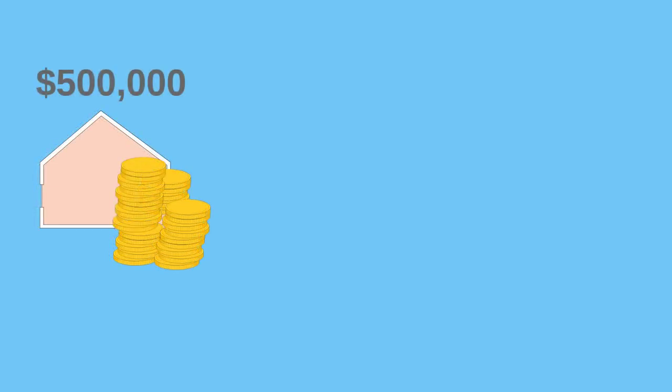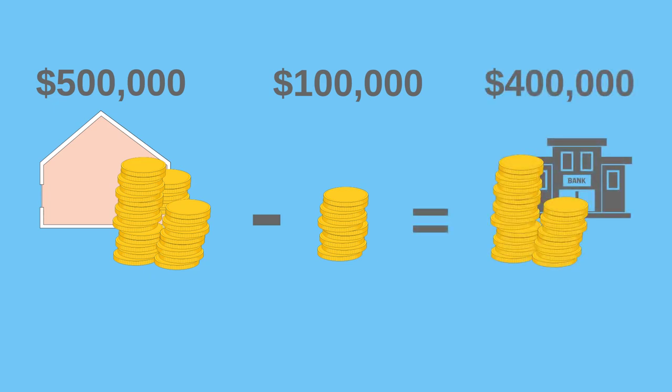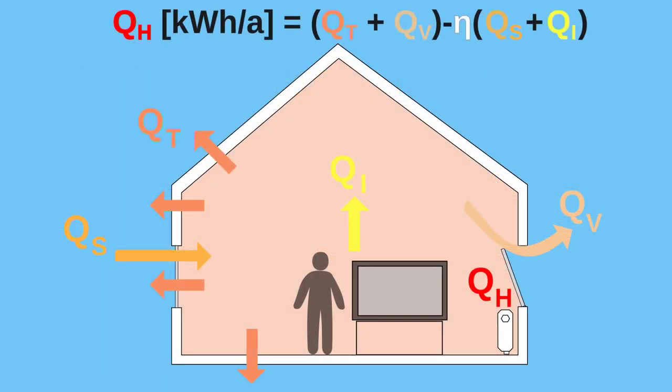Think of the heating requirement QH as a mortgage, and the free heat solar and internal as your savings. If you can offset most of the money needed to pay for your new home with savings, your mortgage can be very small. When financing your house, reducing the cost and increasing savings are both valid strategies.